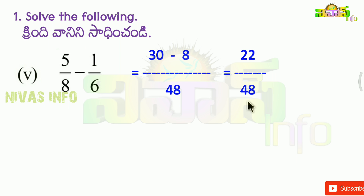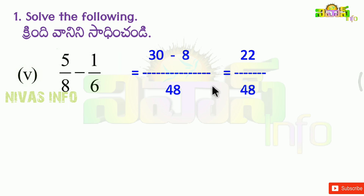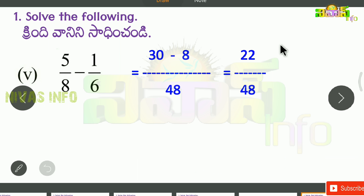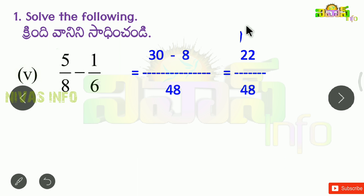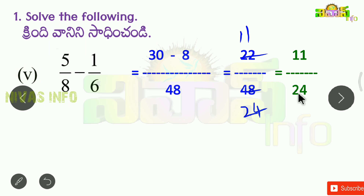We simplify: the LCM gives us a common factor. The answer simplifies to 11 by 24.